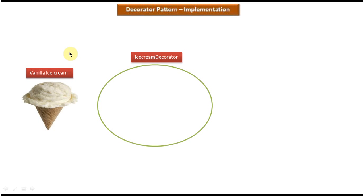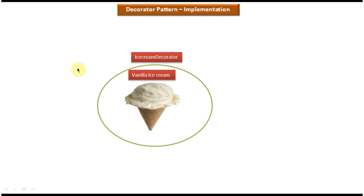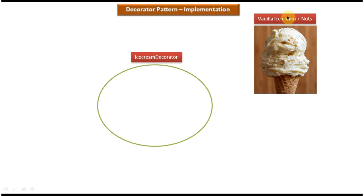Now we will see the scenario where we can use Decorator Design Pattern. On the left side you can see Vanilla Ice Cream. Suppose I want to add Nuts in this Vanilla Ice Cream, or I want to add some Chocolate. Then what I can do is use an Ice Cream Decorator. Suppose I want Vanilla Ice Cream with Nuts — it will add Nuts in the existing Vanilla Ice Cream and return Vanilla Ice Cream with Nuts.